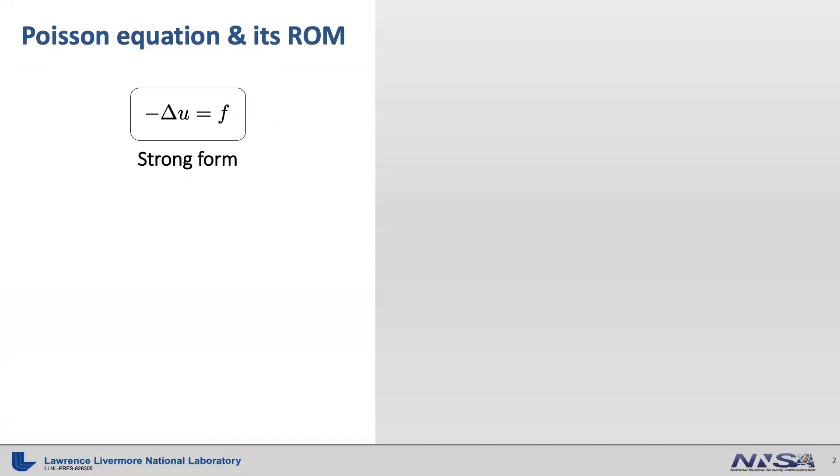In the previous tutorial, we started from a strong form of the Poisson equation and derived a linear system of equations that comes from the finite element discretization. Now we will introduce the projection-based reduced-order model starting with this linear system of equations.